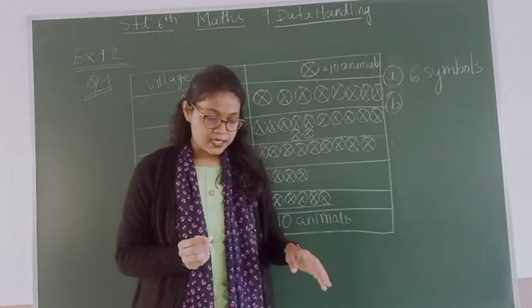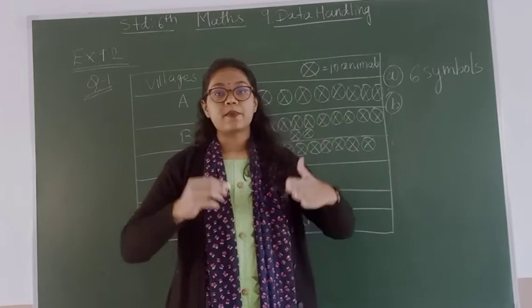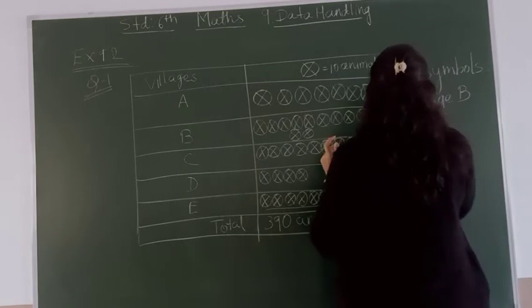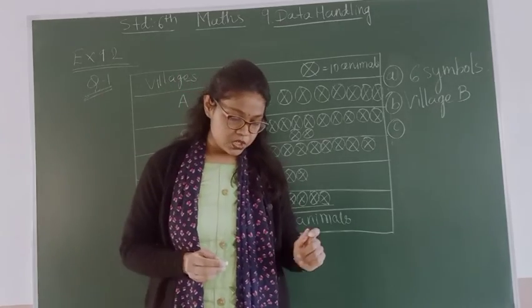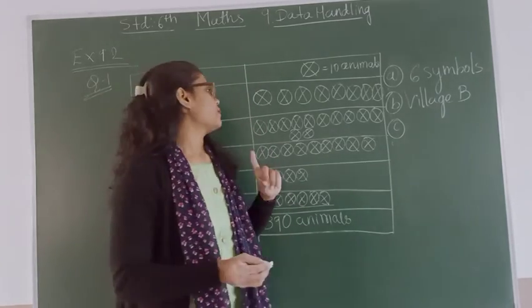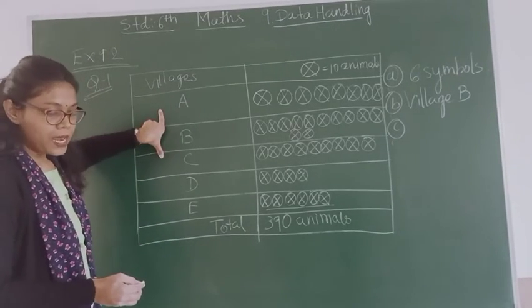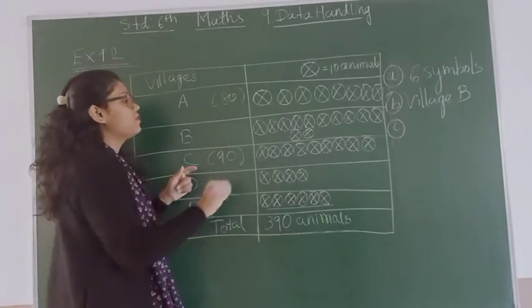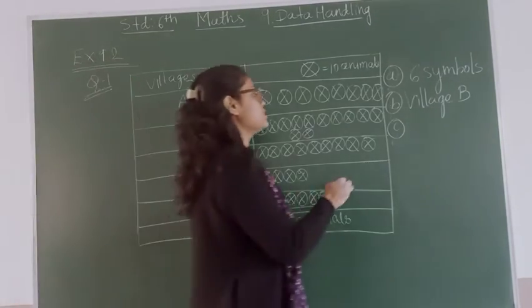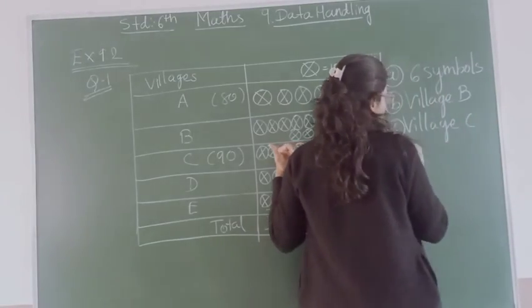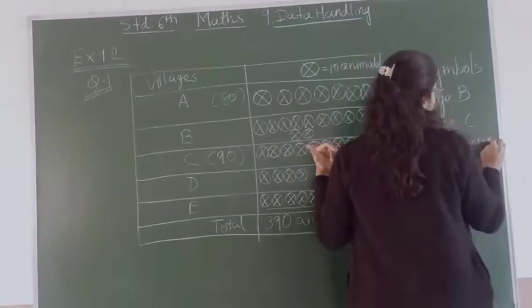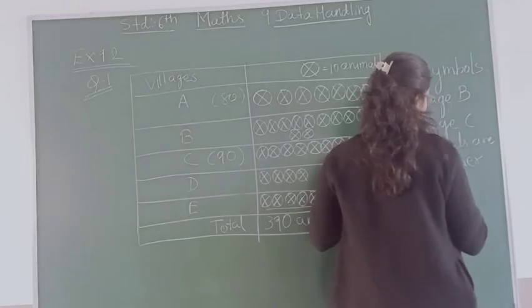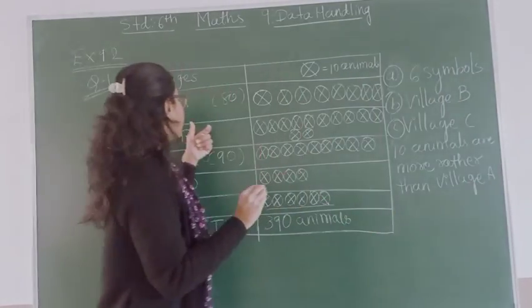Now which village has the maximum number of animals? Village B has maximum number of animals. Which village has more animals, village A or C? Village A has 80 or village C has 90, so which village has more animals? Village C. Ten animals more than village A.